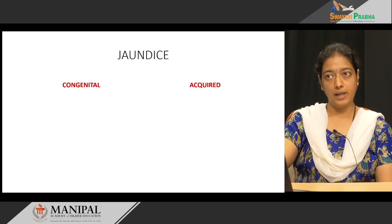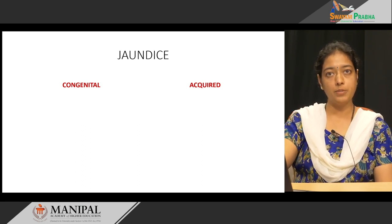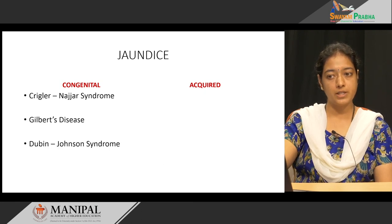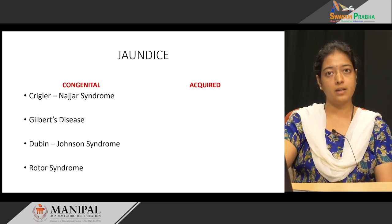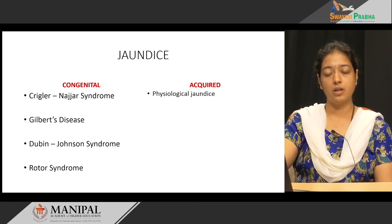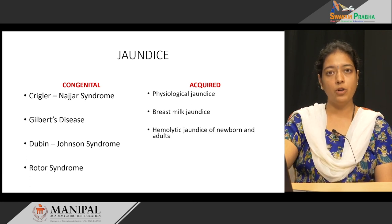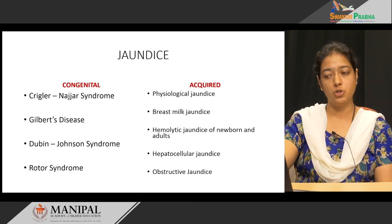To summarize the types of jaundice: there are two main categories, congenital and acquired. Congenital causes include Crigler-Najjar syndrome, Gilbert's disease, Dubin-Johnson syndrome, and Rotor syndrome. Acquired types include physiological jaundice, breast milk jaundice, hemolytic jaundice of the newborn and adults, hepatocellular jaundice, and obstructive jaundice.